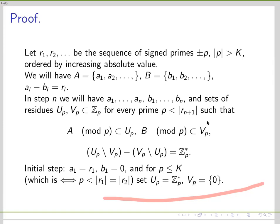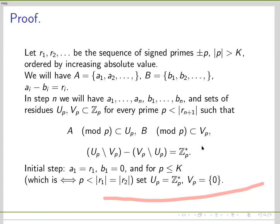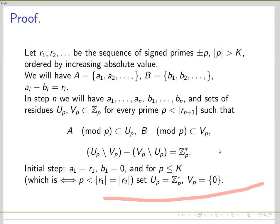The condition we need is that all residues of a are in u_p and residues of b are in v_p, and here is the key condition: the elements of u which are not in v, and the elements of v which are not in u, should have the property that their differences contain every non-zero residue modulo p.